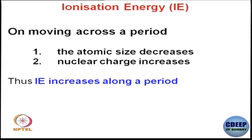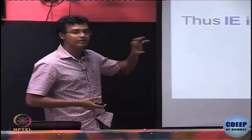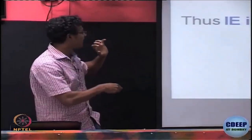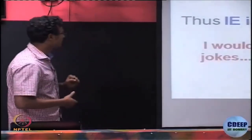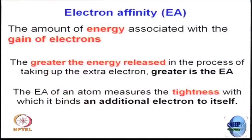On moving across a period from left to right, atomic size decreases and nuclear charge increases, so ionization energy increases along a period. From top to bottom, ionization energy decreases — size increases and electrons are farther from the nucleus, making them easier to remove.